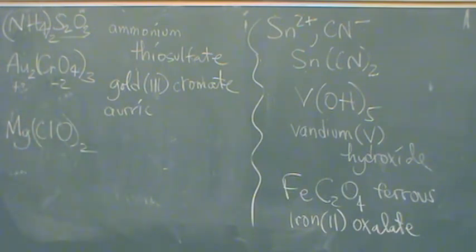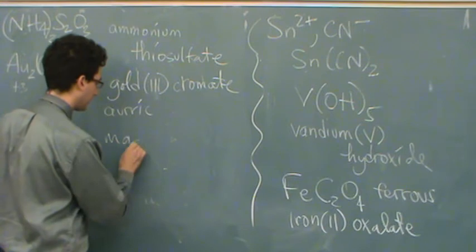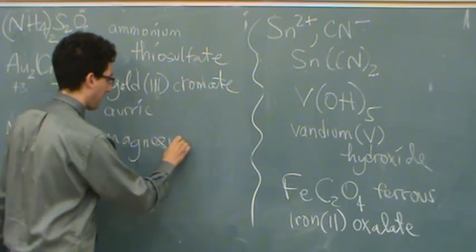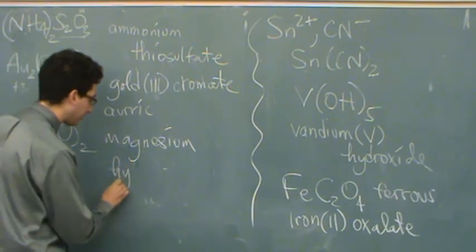Mg(ClO)2. Again, an ionic compound. The first name is as is. There's no transition metal. So magnesium. The second name, what is ClO called? Hypochlorite. Hypochlorite. Yeah, that's right. So this is magnesium hypochlorite.